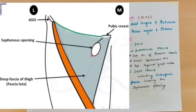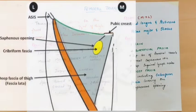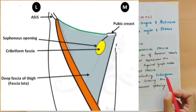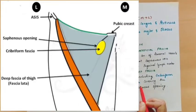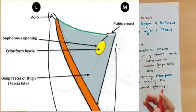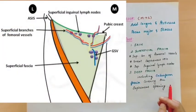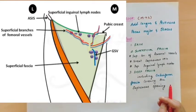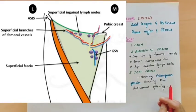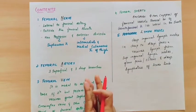In the deep fascia, there is an oval-shaped opening called the saphenous opening. This is covered by a special membrane called the cribriform fascia. The cribriform fascia is pierced by structures passing from superficial to deep — for example, arteries and veins pierce the cribriform fascia.